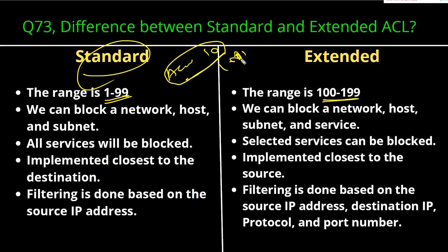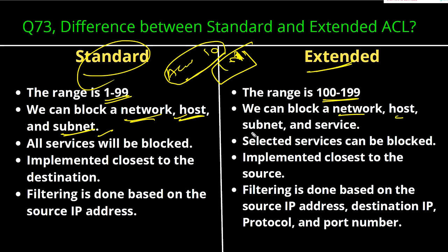In standard ACL you can block a complete network, a particular host, or a particular subnet. In extended ACL you can block network, host, and subnet as well as services — that is a very important point. In extended ACL you can block specific services, but in standard ACL you cannot block a single service. Standard ACL is a basic filtering mechanism, while extended ACL is an advanced filtering technique.